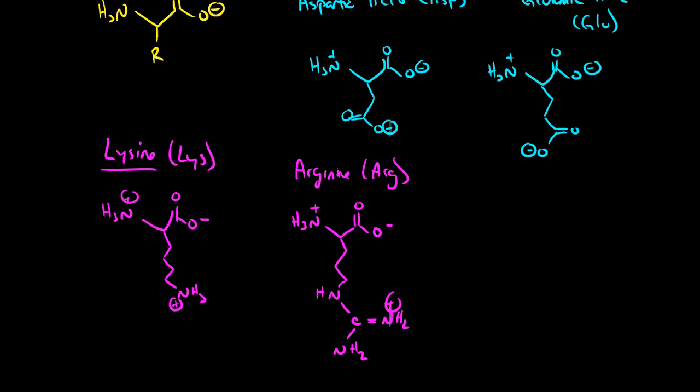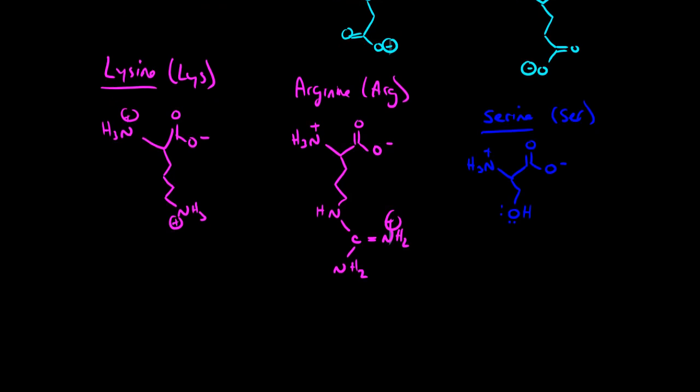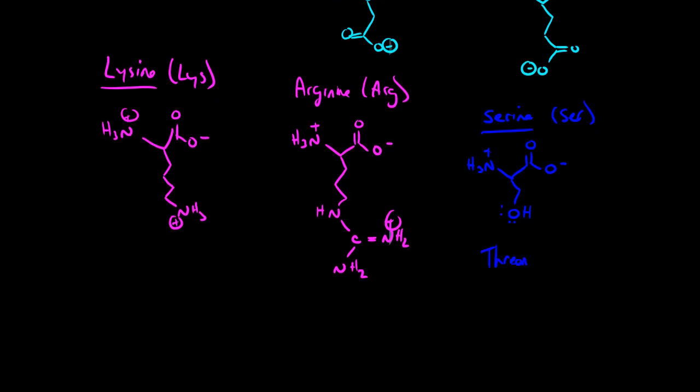Let's look at a couple that contain alcohol functional groups. These are going to be serine and threonine. So serine, we have a single carbon and then an alcohol. And serine is SER. And threonine looks really similar. So threonine is THR. And again it looks really similar. Except instead of just having the OH, you also have a second carbon hanging off of that beta carbon, or the first carbon coming off of the alpha carbon.